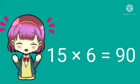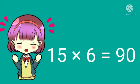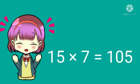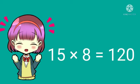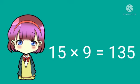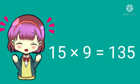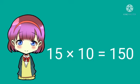Fifteen sixes are ninety. Fifteen sevens are one hundred five. Fifteen eights are one hundred twenty. Fifteen nines are one hundred thirty-five. Fifteen tens are one hundred fifty.